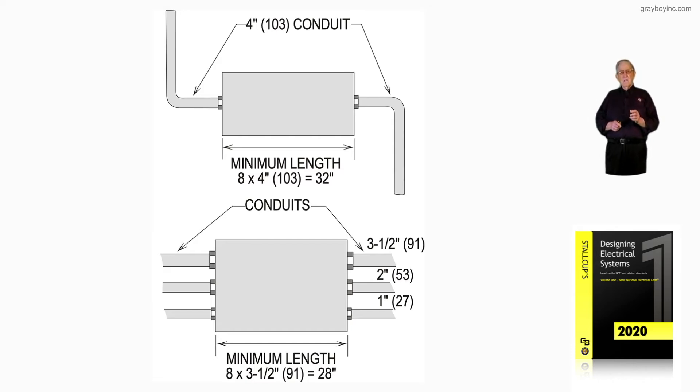But since the conductors are number four or larger, it's the size of the conduit where it's a straight angle or U-type pull. So this illustration is illustrating a straight pull based upon 314.28A.